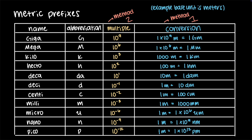For kilo, the symbol is lowercase k, the multiple is 10³, and the conversion factor is 1 kilometer equals 1000 meters. For hecto, the symbol is lowercase h, the multiple is 10², and the conversion factor is 1 hectometer equals 100 meters. For deca, the symbol is lowercase da, the multiple is 10¹, and the conversion factor is 1 decameter equals 10 meters. For deci, the symbol is lowercase d, the multiple is 10⁻¹, and the conversion factor is 10 decimeters equals 1 meter.